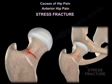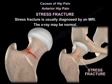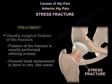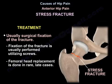Another reason for anterior hip pain is stress fracture, which is usually diagnosed by an MRI, as the x-ray may be normal. Early diagnosis is important before the fracture displaces and gives a bad result. Treatment is usually surgery by fixation of the fracture, performed utilizing screws. Femoral head replacement is done in rare late cases.